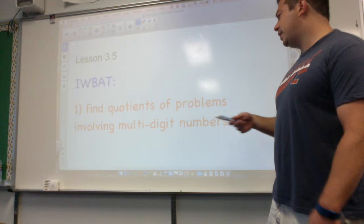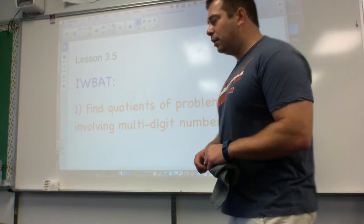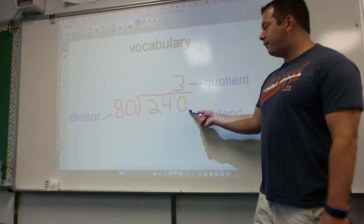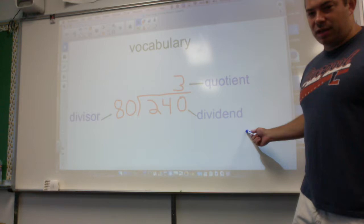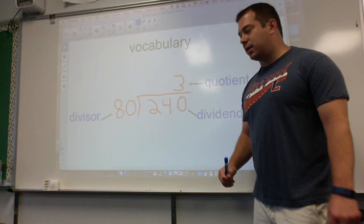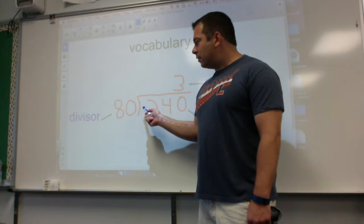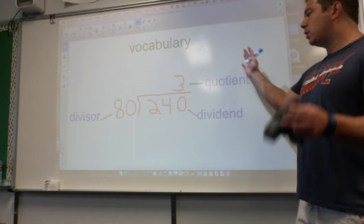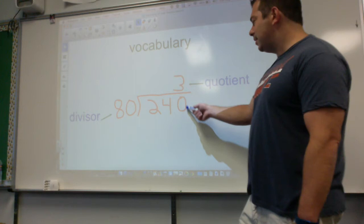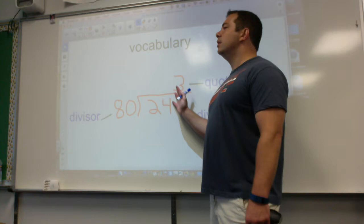Here's your objective: I will be able to find quotients of problems involving multi-digit numbers. Quotients, that sounds like a vocabulary word. Let's check out our vocabulary. I have 240 divided by 80, and my answer would be 3. The 240 is my dividend. Now I'm going to divide my dividend by 80, that's called my divisor. And when I get my answer of 3, the answer when you divide is called your quotient.